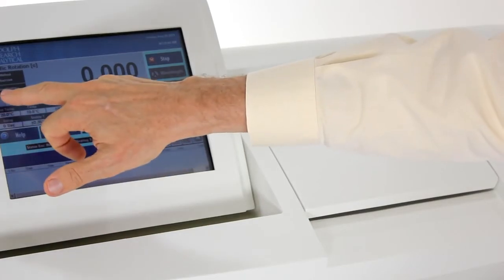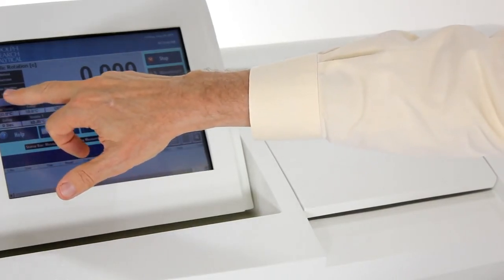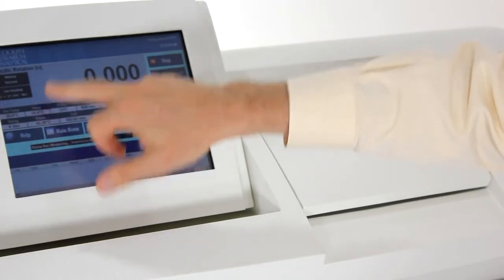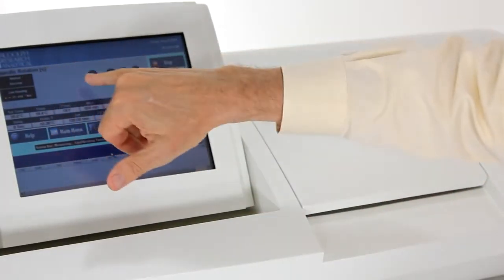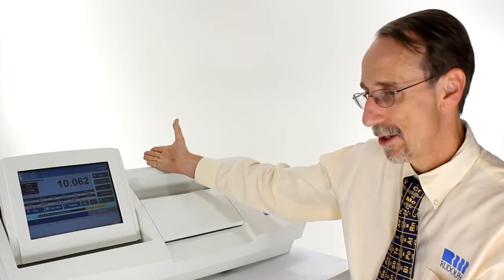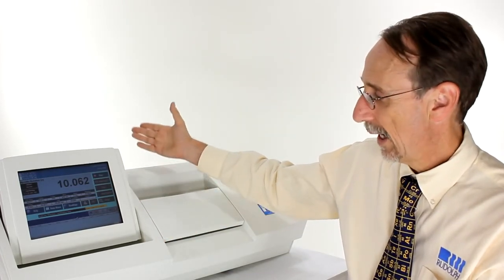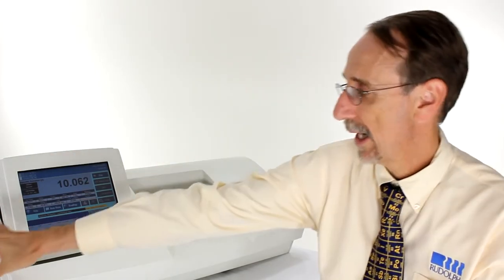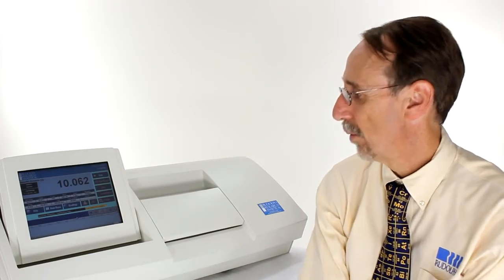It will measure the optical rotation and display this under the live reading. It will then calculate the specific rotation using the formula within the USP and display on the main screen. In this case we're just looking at the screen. We could also have the instrument connected to a network and it would save automatically to the network, or we could have it connected to a printer and the result would print automatically.